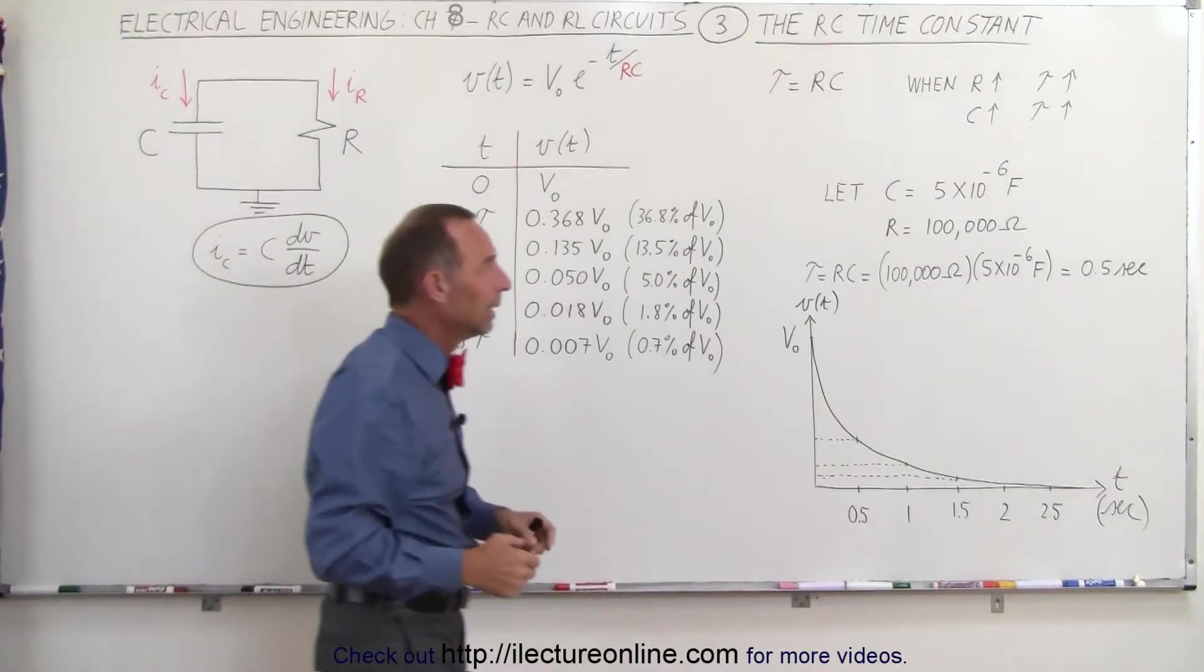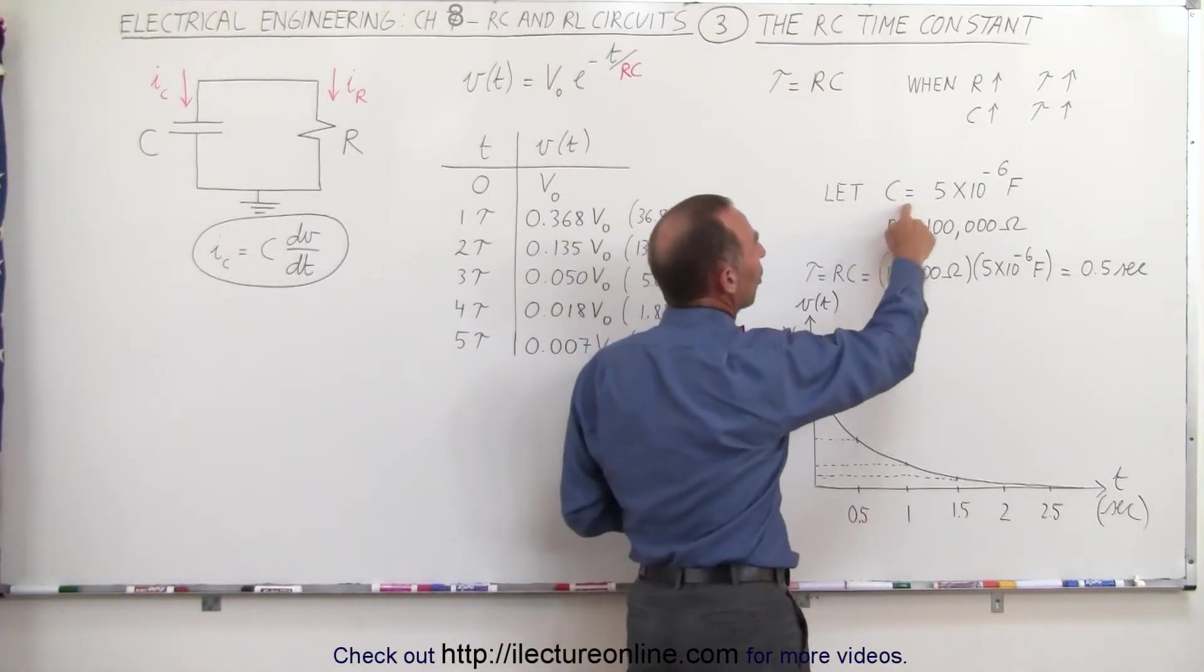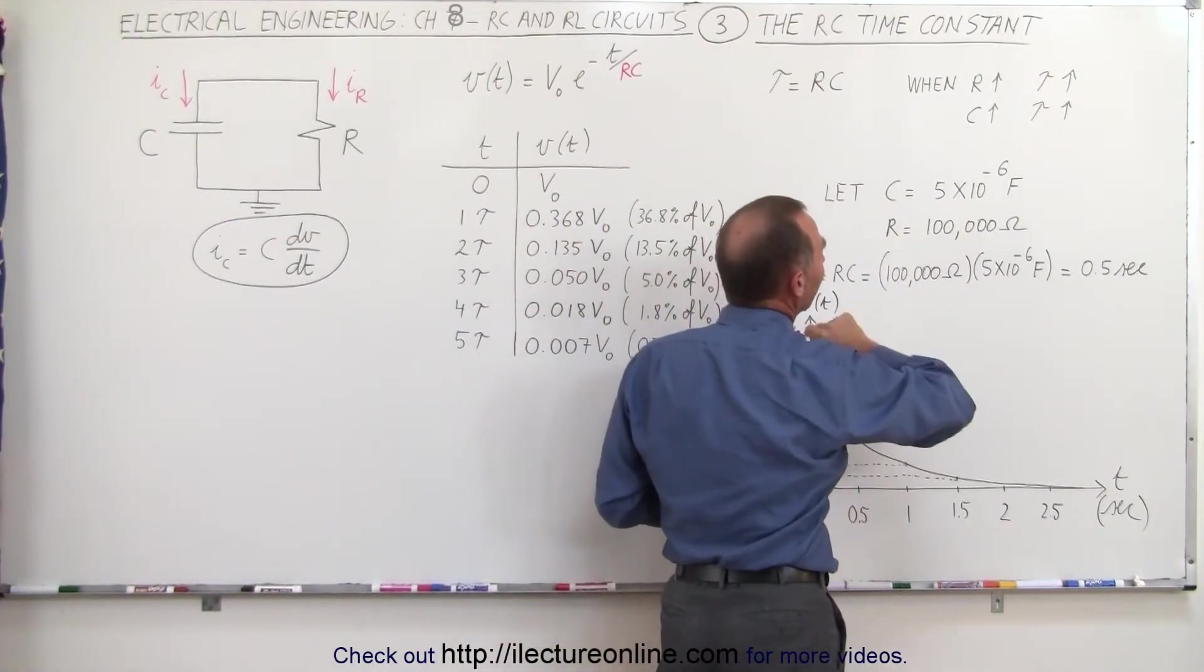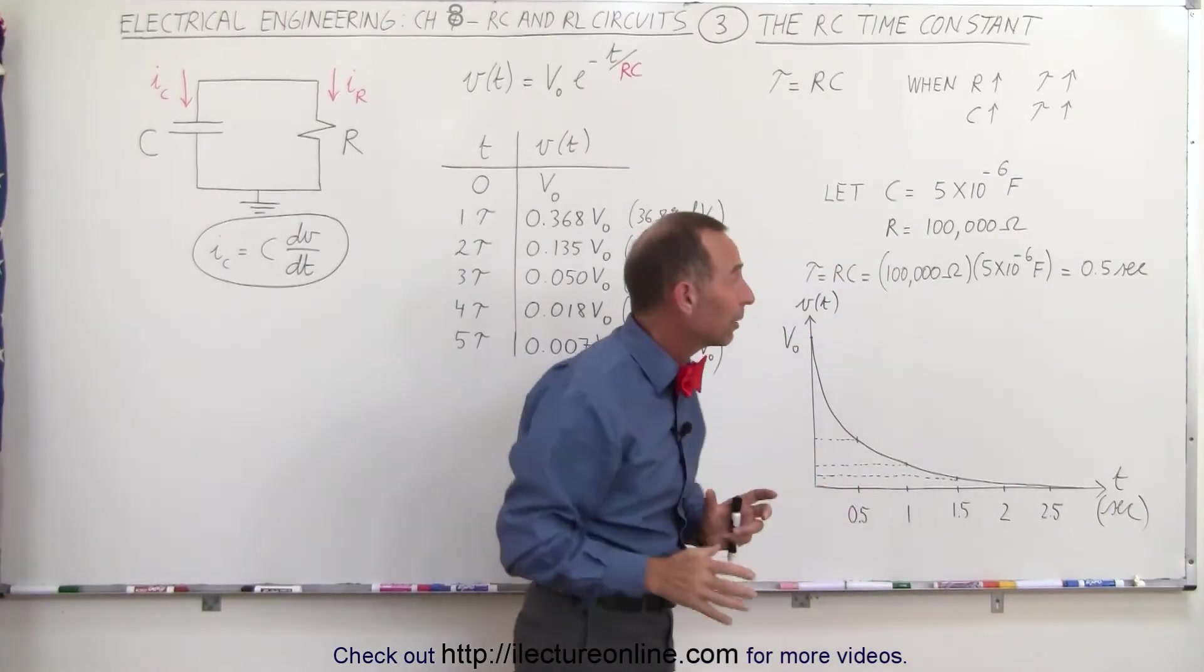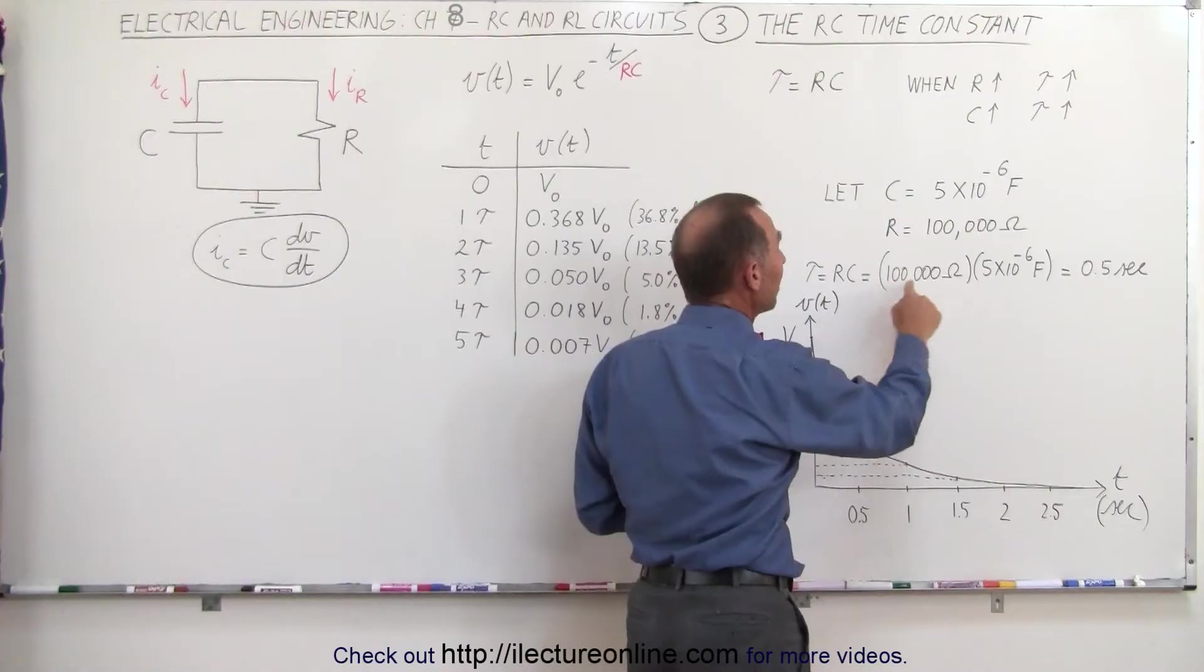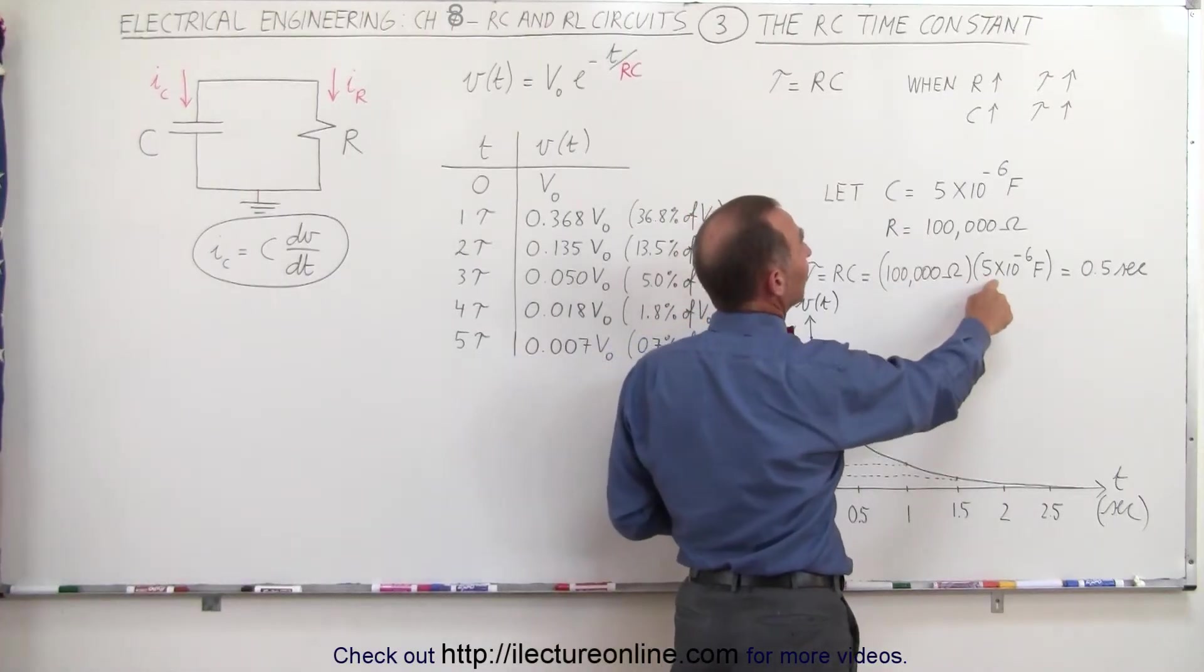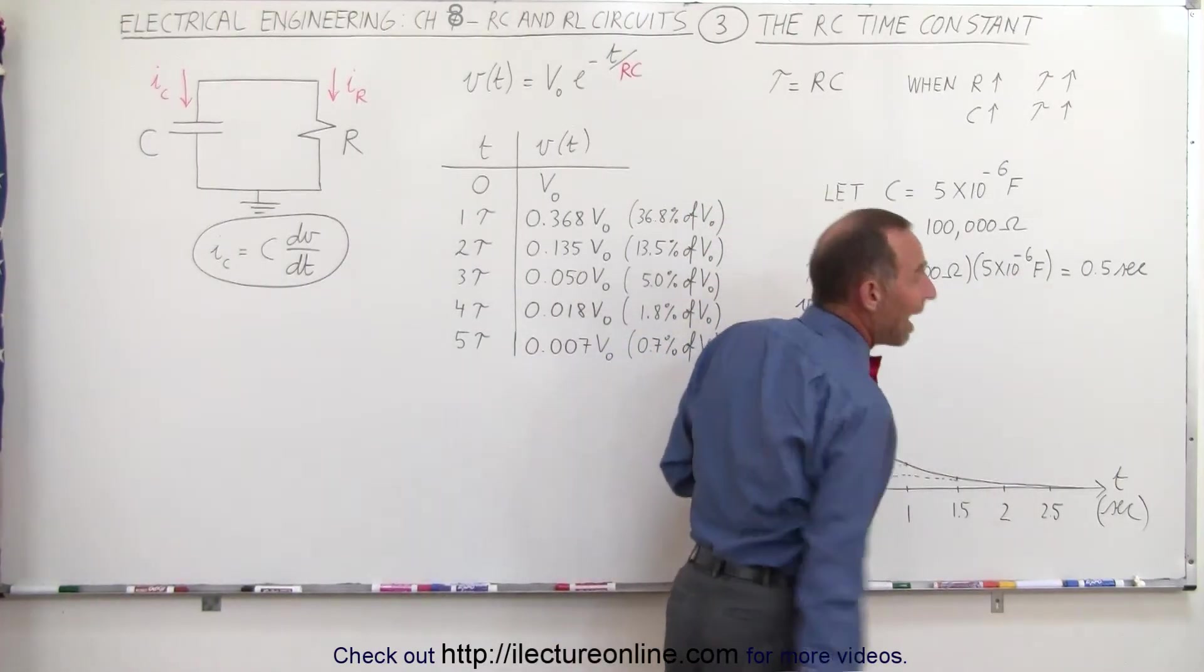As an example, let's say that we had a capacitance of 5 microfarads, and we had a resistance of 100,000 ohms. If we multiply those together, R times C, 100,000 times 5 times 10 to the minus 6, gives us a half a second.